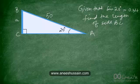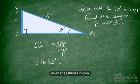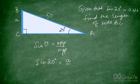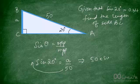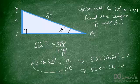This should be quite easy because we know that sine of theta is equal to opposite upon hypotenuse. So sine of 20 degrees equals a over 50. Cross-multiplying, 50 times sine 20 degrees equals a, which means 50 multiplied by 0.34 equals a, giving us a equals 17.